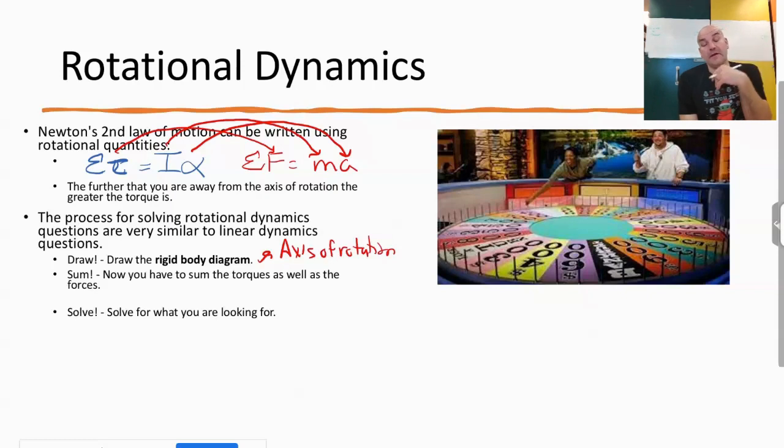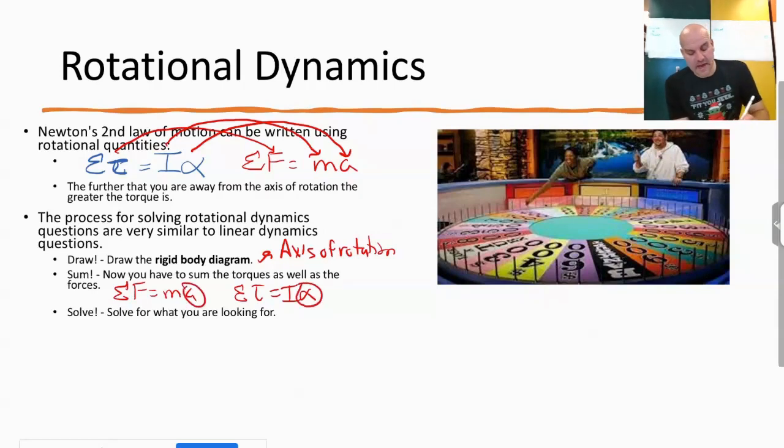The next part, sum. Now in addition to summing the forces, we have to now sum the torques. So we would write sum of F equals MA. And then somewhere else, we would say sum of the torques equals I alpha. When we do this, remember these two, alpha and A, are related in the equation A equals R alpha, or you can solve that for alpha and say alpha equals A over R. Because you may have to substitute that in at some point in time, especially if you're looking for the acceleration of a system, not the angular acceleration of a system.